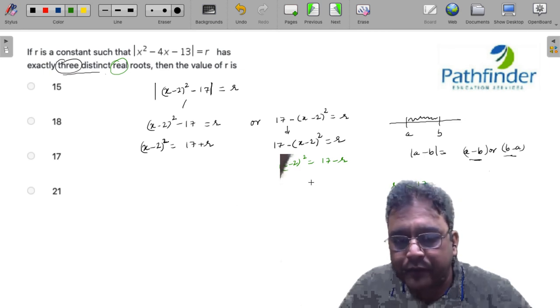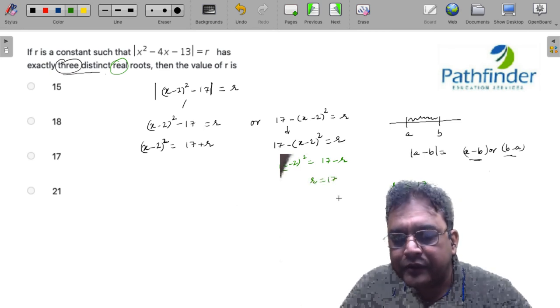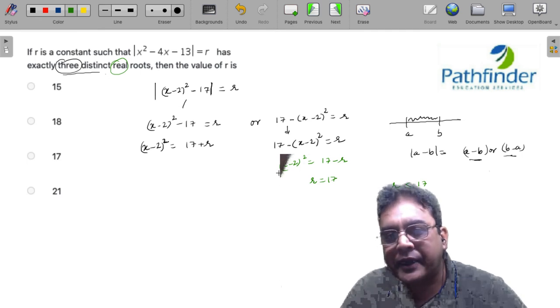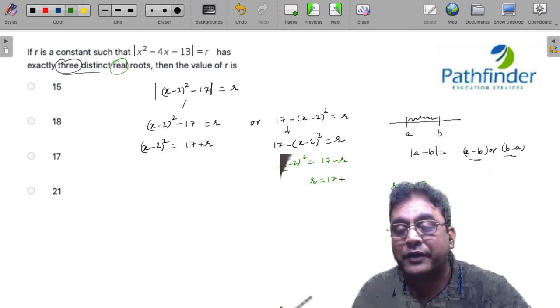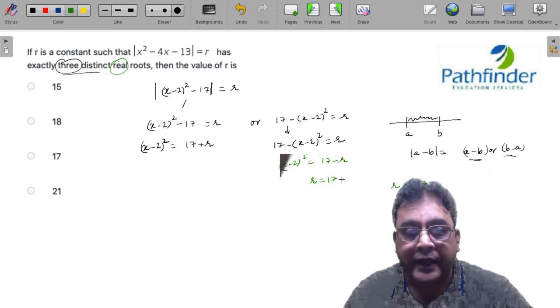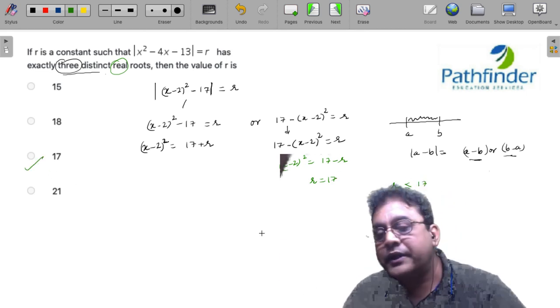And that is only possible if r is equal to 17 and (x - 2)² becomes equal to 0. Then (x - 2)² can have only one value, that is 0, and hence only three possible roots.